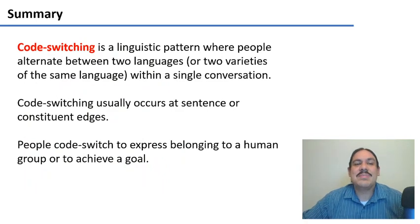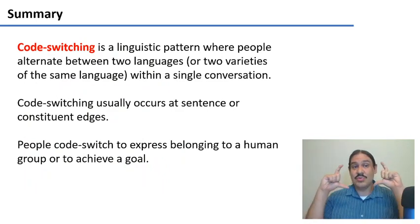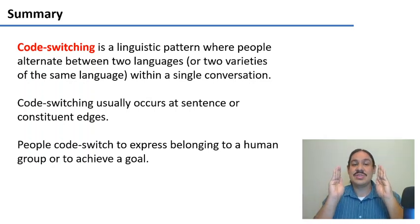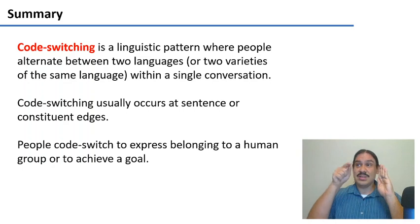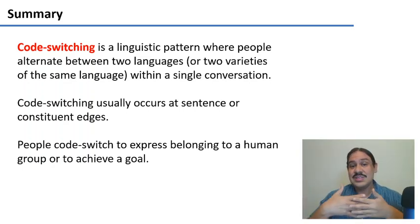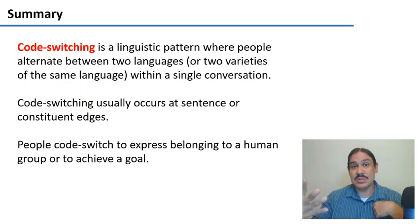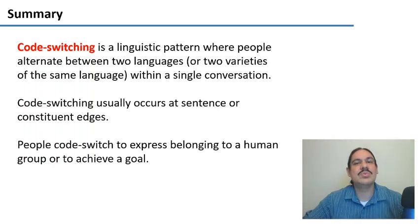Summary: Code switching is a pattern where people alternate between two languages or two varieties of the same language within a single conversation. This usually occurs at sentence edges or constituent edges, and people do this to express belonging to a human group. In the next video, we'll talk about pidgin and creole languages.